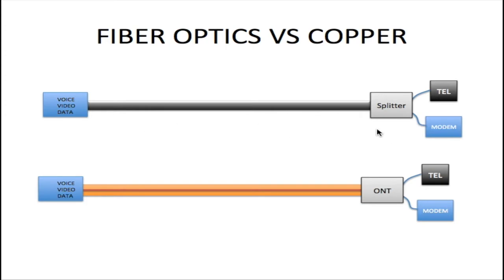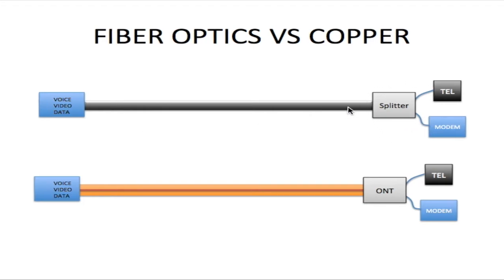Looking at the top here, we have a splitter. A splitter is how we separate video and data from the voice communication — voice goes to the telephone and video and data go through the modem. With the light signal, we don't have a splitter; we have something called an ONT, which stands for Optical Network Terminal. This unit receives a light signal from the fiber optic line and converts it to an electrical signal to communicate with your telephone and modem.